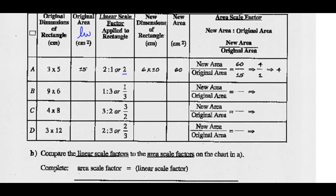The linear scale factor applied is 2. So the new dimensions of the rectangle are 3 times 2, which is 6, by 5 times 2, which is 10. The new area, which is length times width, would be 6 times 10, or 60. To find our area scale factor, we take the new area, 60, divided by the original, which was 15. So 60 divided by 15 is 4 over 1, or we have an area scale factor of 4.